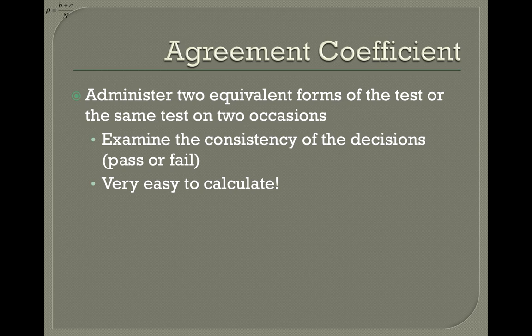What kind of coefficients do we calculate for these types of tests? There's an agreement coefficient that we can calculate to address reliability issues with criterion-referenced tests. These are very easy to administer. You administer two equivalent forms of the test or the same test on two occasions, and examine the consistency of the decisions. The focus on criterion-referenced tests is the decisions — pass or fail — and the agreement coefficient is extremely easy to calculate.